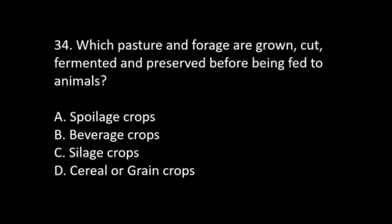Number 34. Which pasture and forage are grown, cut, fermented, and preserved before being fed to animals? A. Spoilage crops. B. Beverage crops. C. Silage crops. D. Cereal or grain crops. The answer is C. Silage crops.